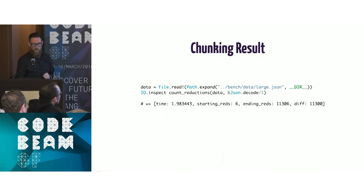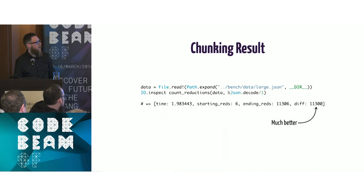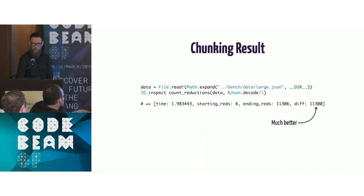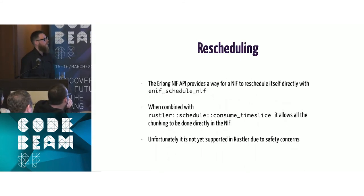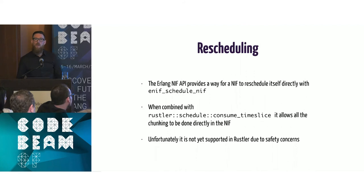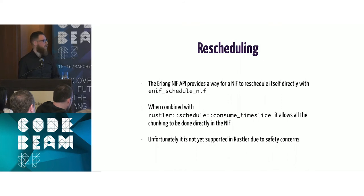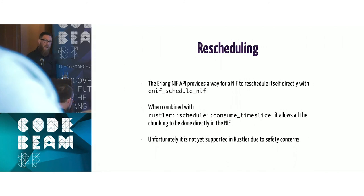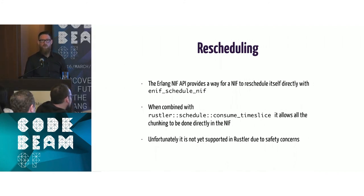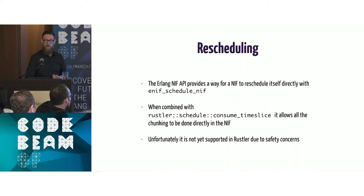Now we have eleven thousand three hundred reductions — much, much better. Rescheduling is not currently available inside Rustler because we can't ensure at compile time that the API is used correctly. One of Rustler's goals is to ensure you can never crash the BEAM, meaning the API must not be usable incorrectly at compile time. That's something we're working to figure out for the future.